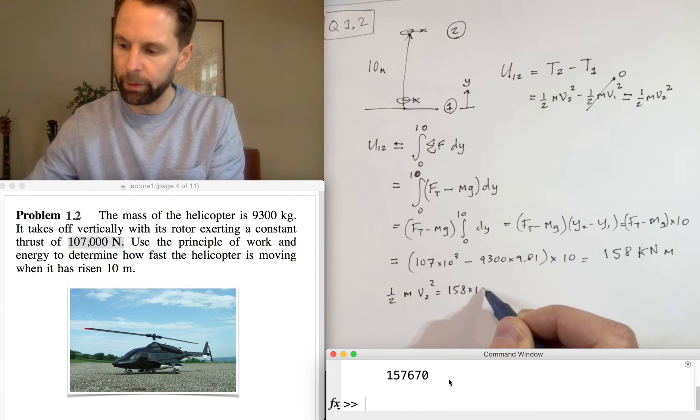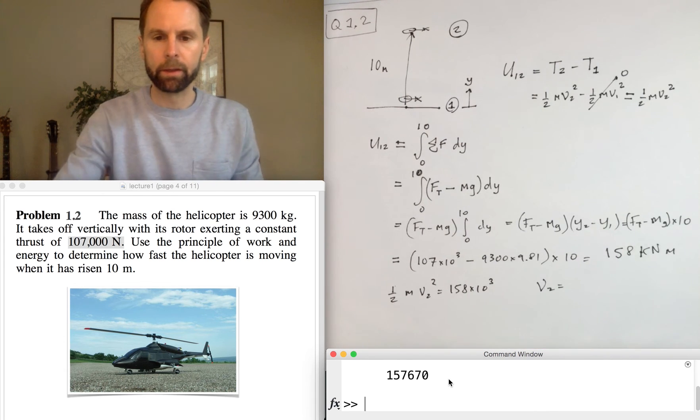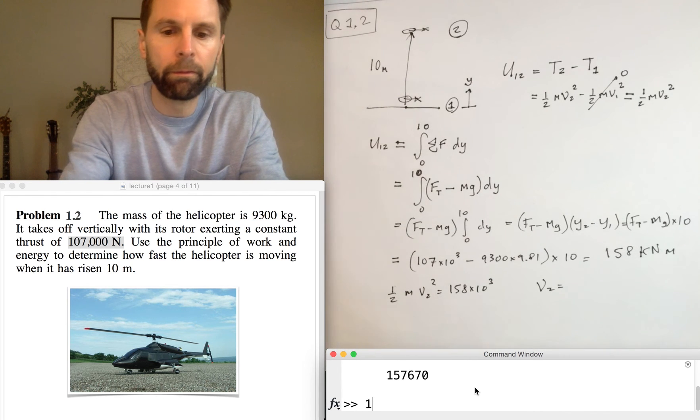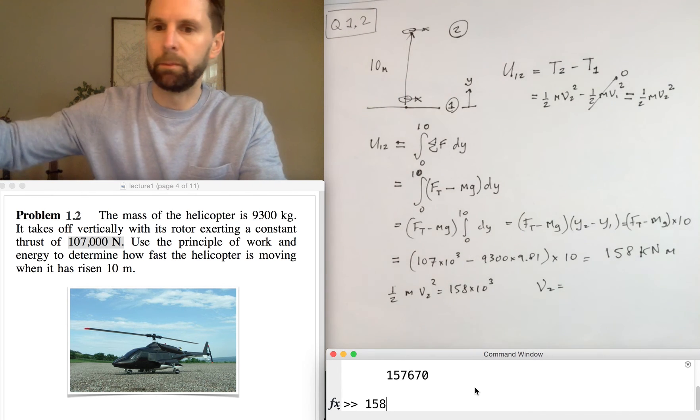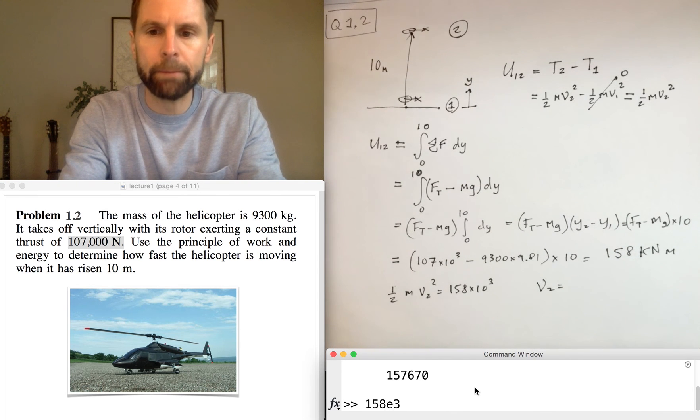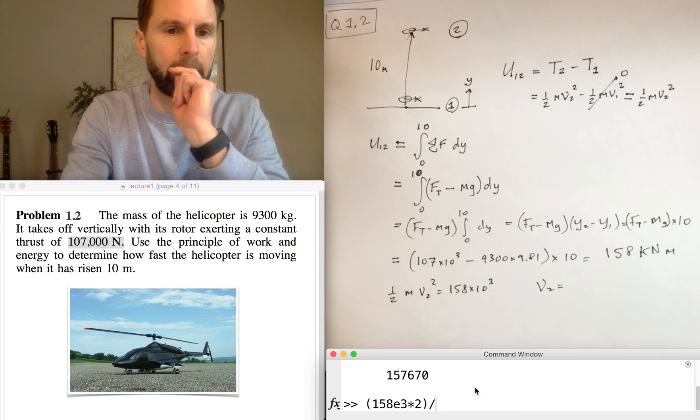And with a bit of rearrangement, we can write, I'm going to try and do this in my head, that 158 times 10^3 times 2, all divided by the mass which is 9300, gives you that.